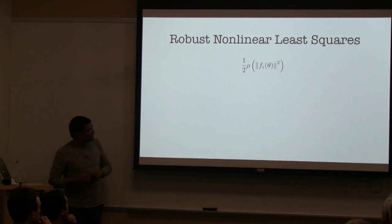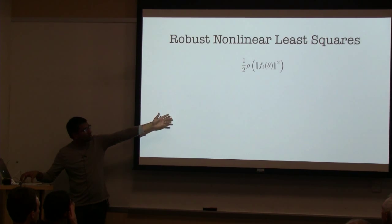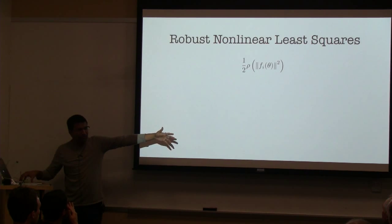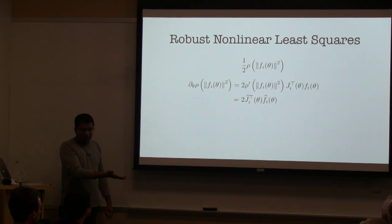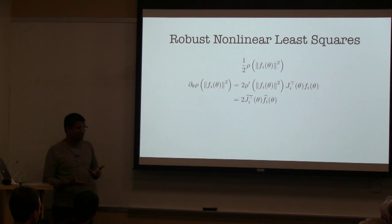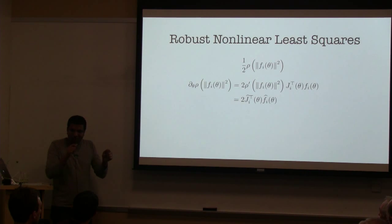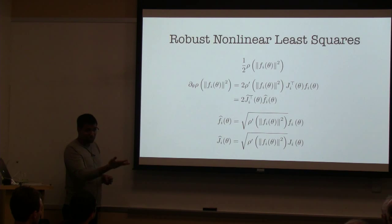The idea is to modify each term in the objective function to ρ(‖f‖²), where ρ is the robust loss function. Since this is not itself a nonlinear least squares objective, you rescale: take the first derivative of the robust loss function and scale the residual and Jacobian by its square root, so that the gradient has the correct magnitude. Regarding non-differentiable piecewise loss functions: if your loss function is non-differentiable at a few points, you can always smooth it arbitrarily close to the original without significant change in behavior.